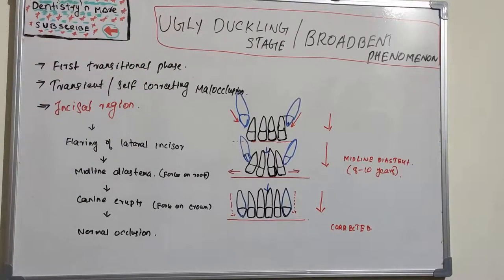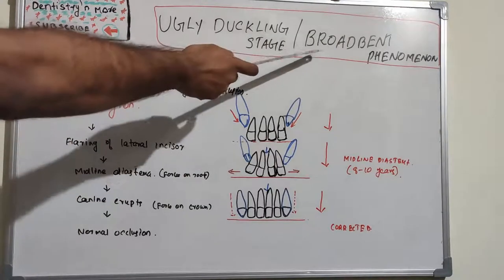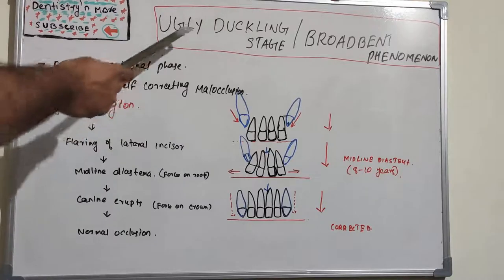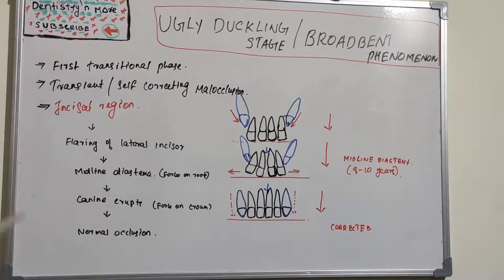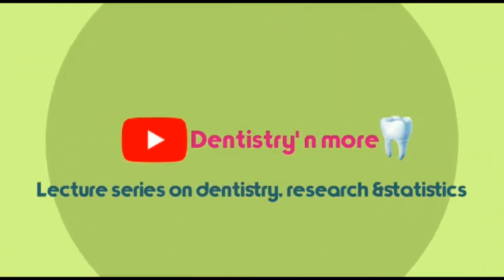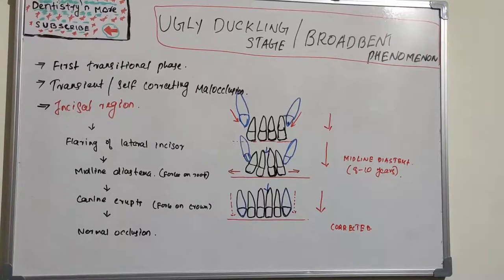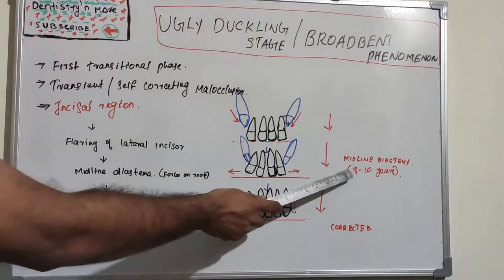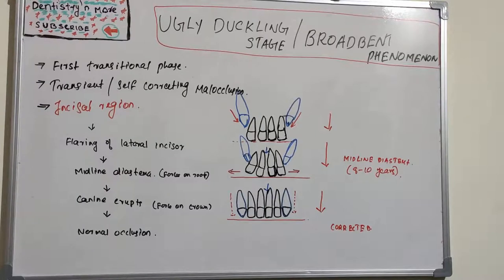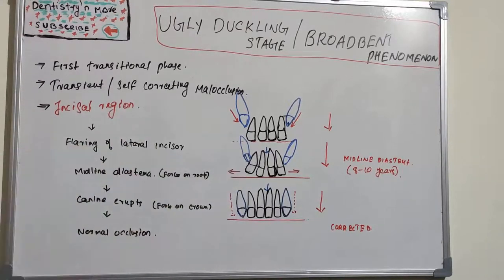So what is exactly the Ugly Duckling Stage, and why is it known as ugly duckling? The Broadbent Phenomenon was explained by a person named Broadbent. The Ugly Duckling Stage is a peculiar appearance of our upper teeth during a period of eight to ten years. It was literally ugly because the teeth were flared up and there was a midline diastema.